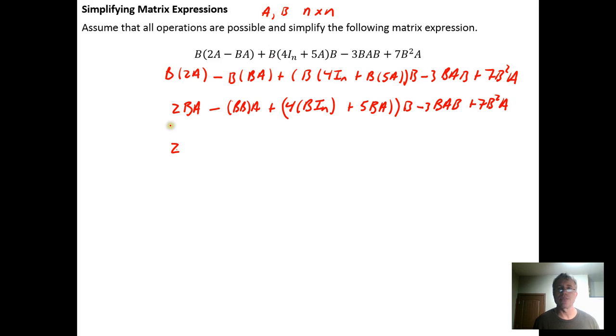We have minus 3BAB plus 7B²A. Here I have 2BA, I'm just going to bring this down for right now. 2BA minus B times B. Because B is a square matrix I can rewrite it as B² times A, plus 4 times B times the identity matrix is just B.